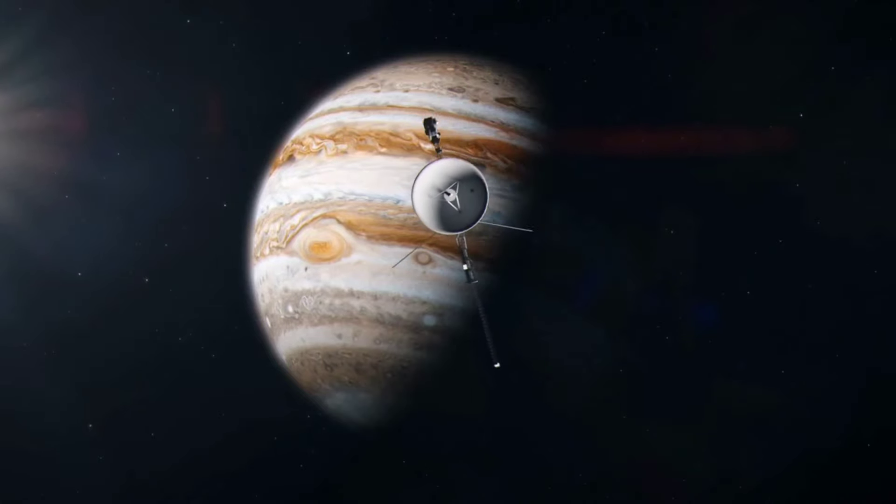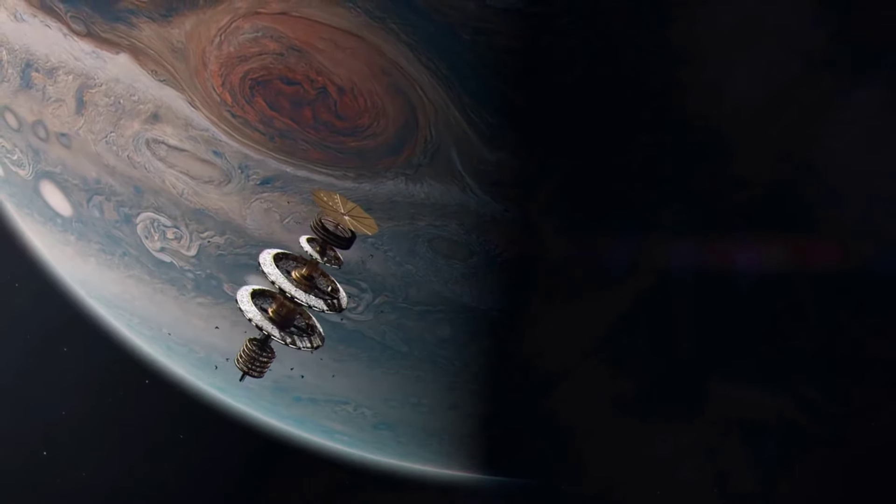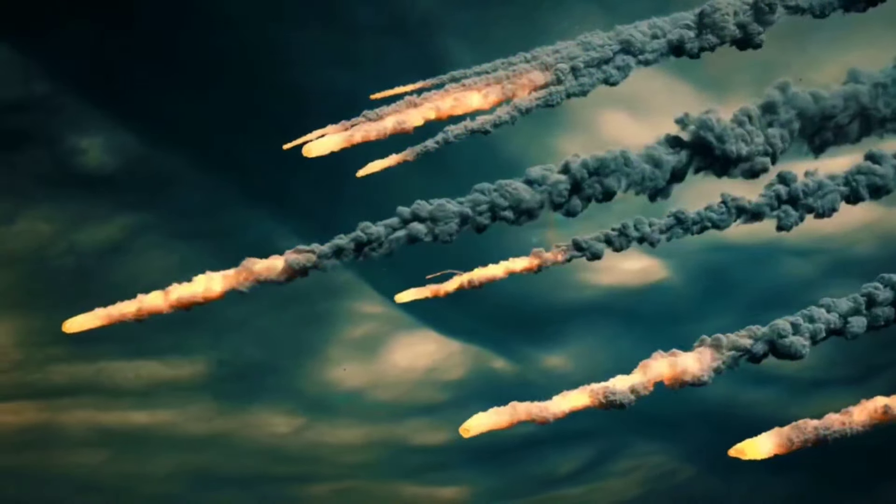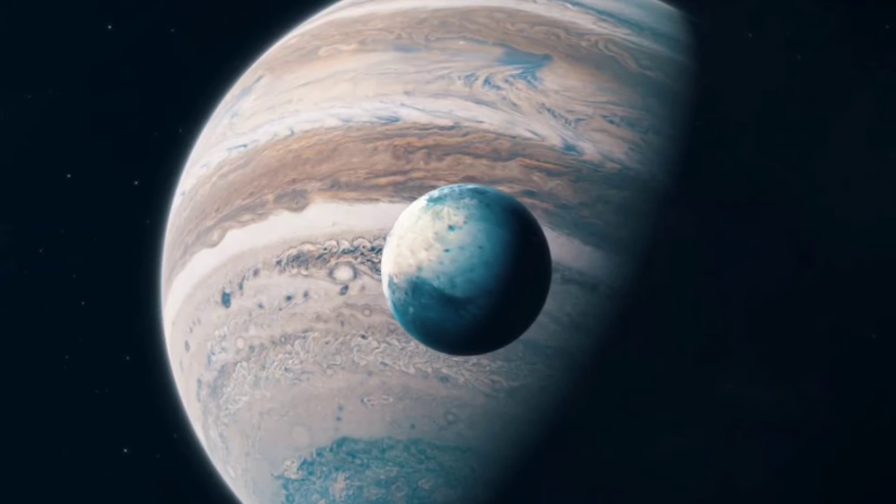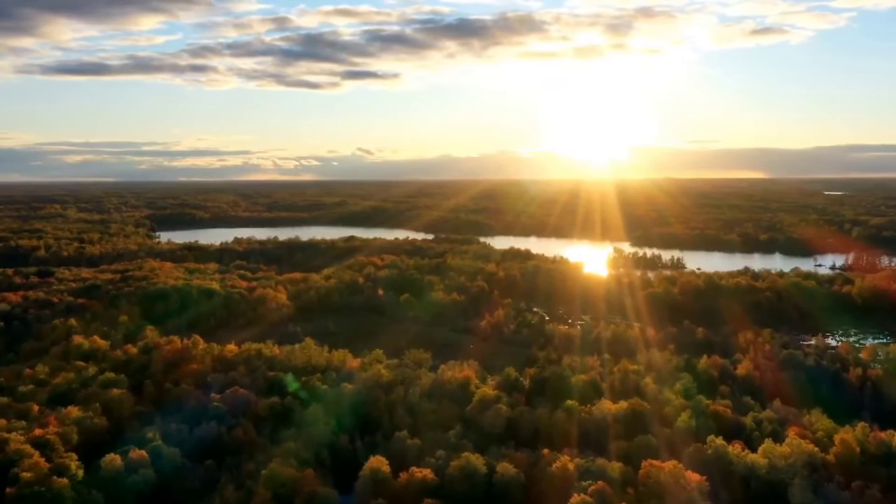Situated at a distance of 600 to 1,000 million kilometers from Earth, the gas giant Jupiter might seem distant, yet its absence would have profound effects on our planet. The impact of Jupiter's removal would extend beyond mere notice. It could alter Earth's existence as we currently know it.